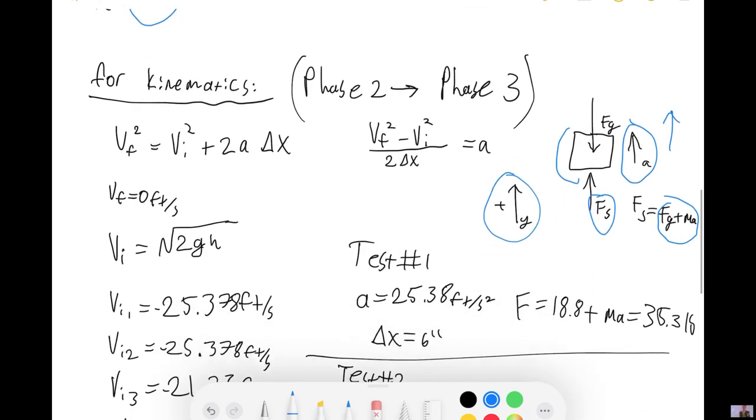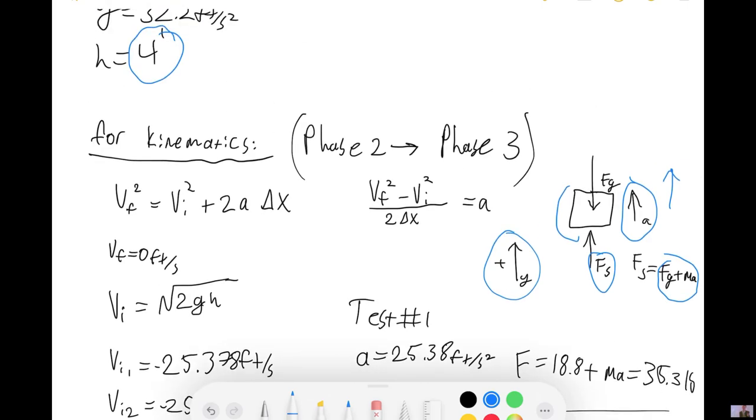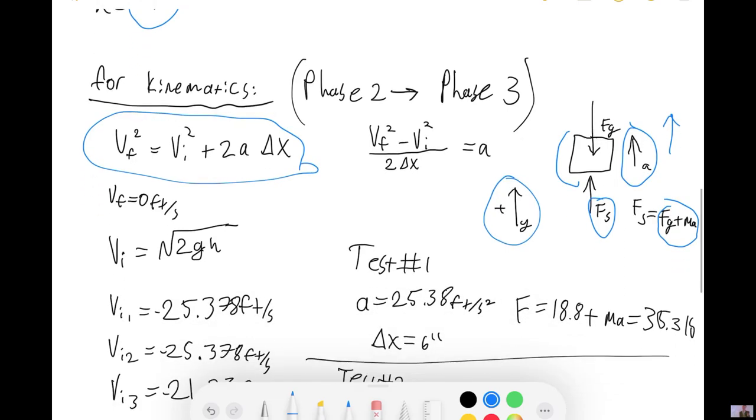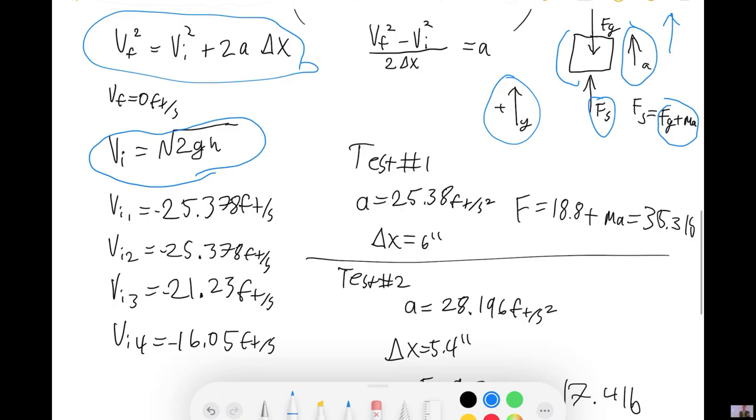We have different tests. First, we have these formulas. Based on this formula, we can arrive at a couple of different helpful equations. The first one is going to be to calculate our initial velocity. The square root of 2GH will give us how fast this mass is moving when it reaches the strut. VI1, that's for test one, test two, test three, so on and so forth.